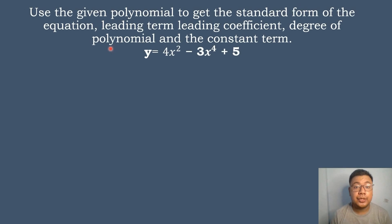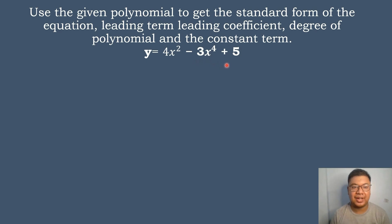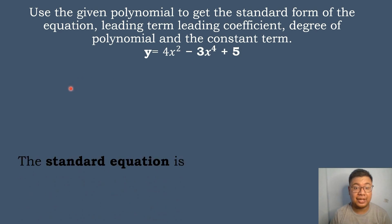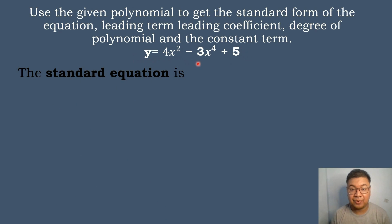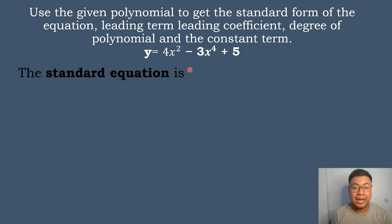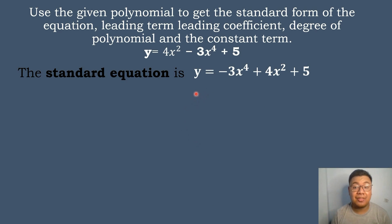For the next example, given the polynomial function y = 4x squared minus 3x to the fourth power plus 5, we will find the standard form of the equation, the leading term, the leading coefficient, the degree of polynomial, and the constant term. Since the equation is not yet written in standard form, we arrange the terms in descending order of exponent. The standard form is y = negative 3x to the fourth power plus 4x squared plus 5.